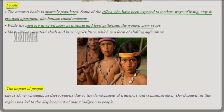People here are sparsely populated. Tribes have been exposed to modern ways of living. They stay in grouped apartment-like houses called malokas. Men are involved more in hunting and food gathering, while women grow crops. Most of them practice slash and burn agriculture, which is a form of shifting agriculture. This is an image of people living in the Amazon forest.